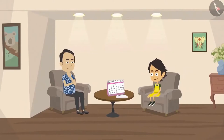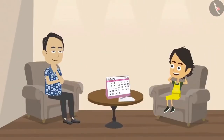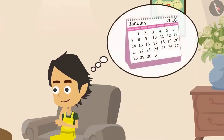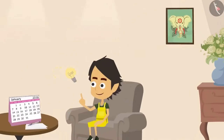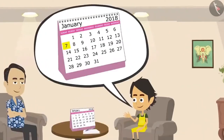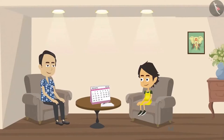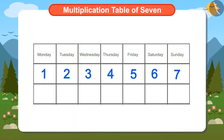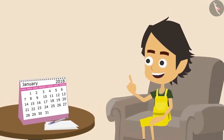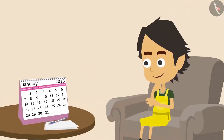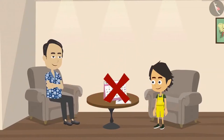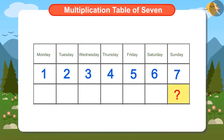By the time mummy gets ready, Papa thinks of teaching something new to Ayushman. He asks Ayushman: what is the date today? Ayushman waits the whole week for Sunday, so it is easy for him to remember that today the date is 7th and the day is Sunday. Ayushman's father asks one more question: if today the date is 7th and the day is Sunday, which will be the date on next Sunday?